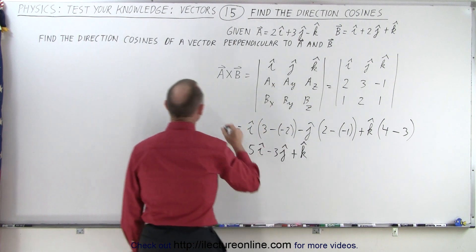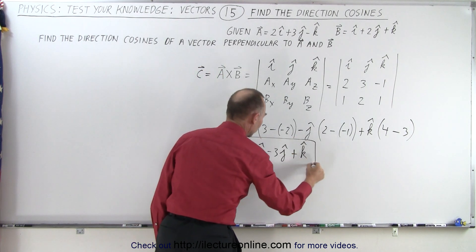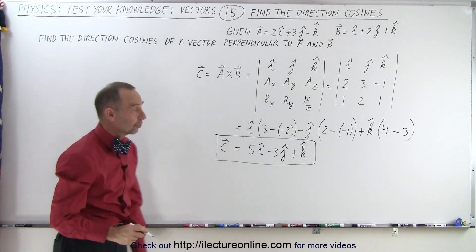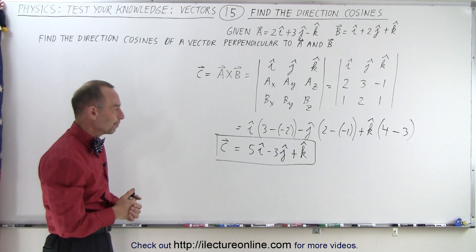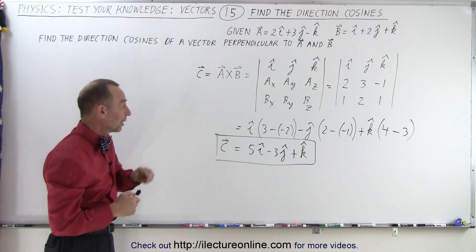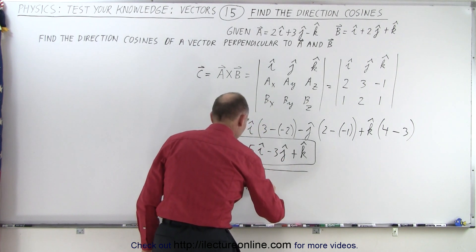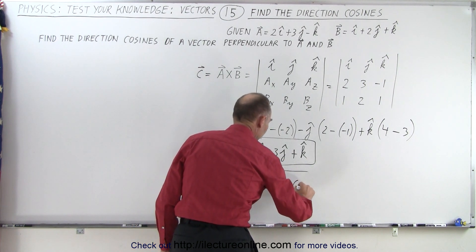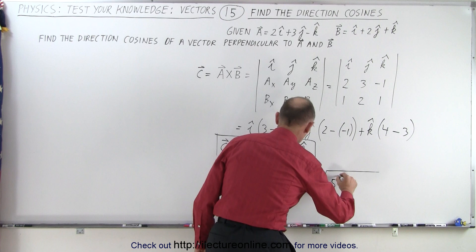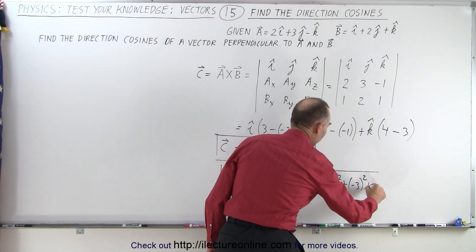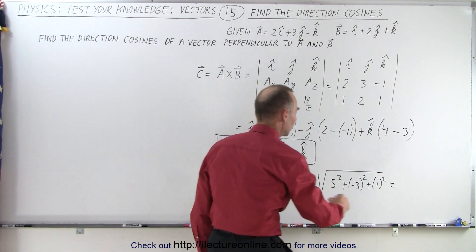Let's call that vector c, which is now equal to (5, −3, 1). This is a perpendicular vector to a and b, and it has the direction cosines of any perpendicular vector to a and b. To find the direction cosines we need the magnitude of c: the square root of 5² + (−3)² + 1², which equals the square root of 25 + 9 + 1, giving the square root of 35.